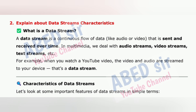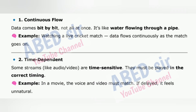Next important long question 2: Explain data stream characteristics. A data stream is a continuous flow of data — like audio or video — that is sent and received over time. In multimedia, we deal with audio streams, video streams, text streams, etc. When you watch a YouTube video, the video and audio are streamed to your device — that's a data stream. Characteristics: 1. Continuous Flow — data comes bit by bit, not all at once, like water flowing through a pipe. Example: Watching a live cricket match, data flows continuously as the match goes on.